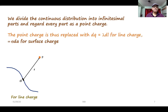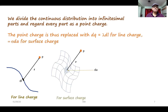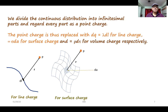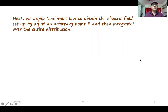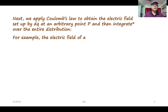We divide the continuous distribution into infinitesimal parts and regard every part as a point charge. The point charge dq is replaced with dq equal to lambda dl for line charge, sigma dA for surface charge, and rho dV for volume charge respectively. Next we apply Coulomb's law to obtain the electric field set up by dq at an arbitrary point P, then integrate over the entire distribution. For example, the electric field of a line charge is E equal to 1 over 4 pi epsilon naught, integrated over the line, of r-hat over r squared times lambda dl.